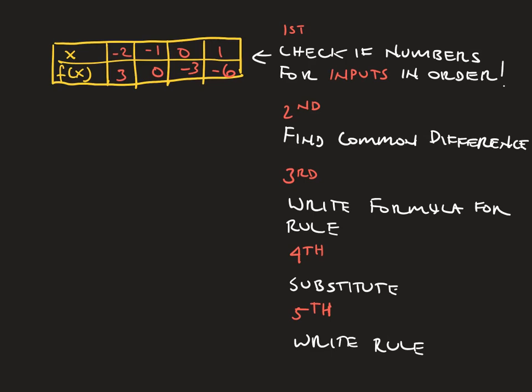Next, we're going to find the common difference by looking at the outputs, the f of x's. And when we do that, if we look very, very carefully, we're going to see that each and every time as we move from one number to the next, we're decreasing by 3. So the common difference here is going to be minus 3.